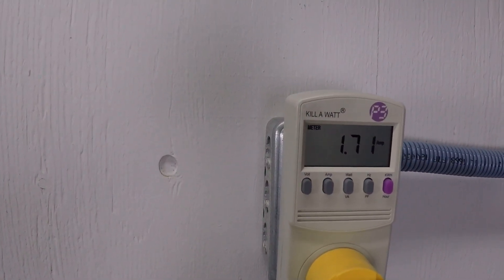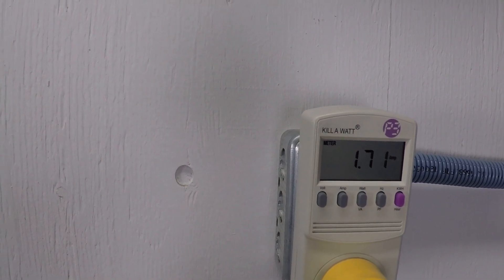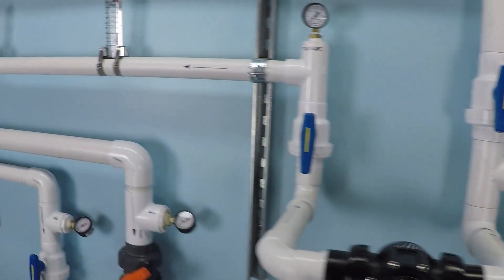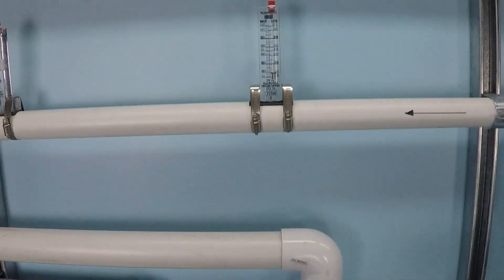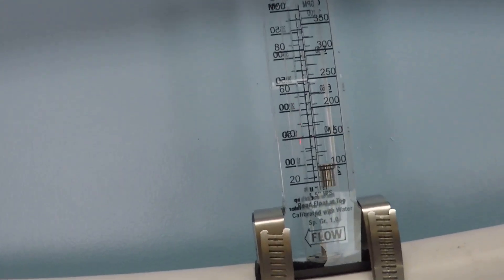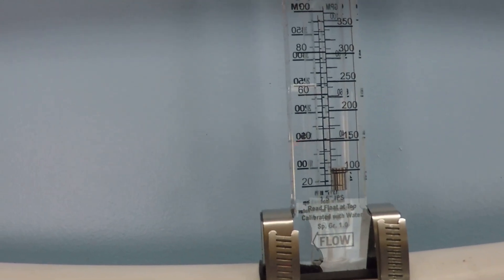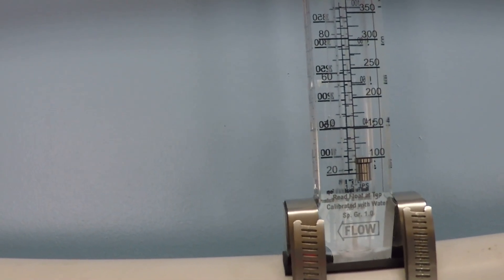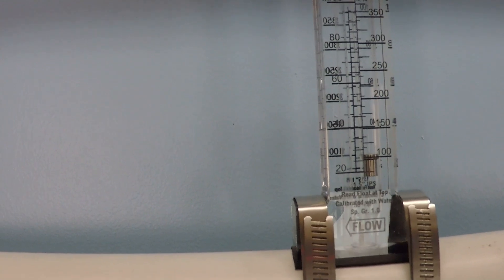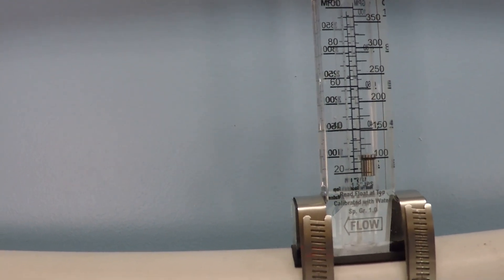1250 RPM. 1.71 amps. We're now onto our high range meter here, showing us right around 26, between 26 and 27 gallons per minute.